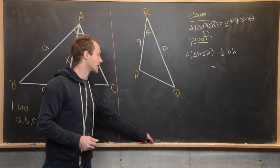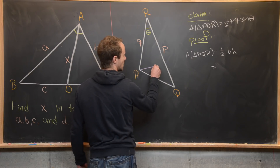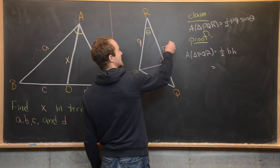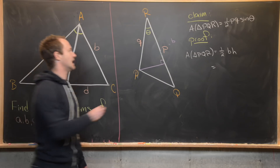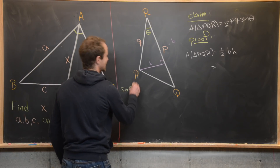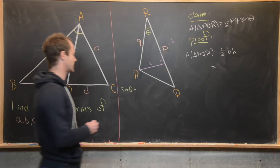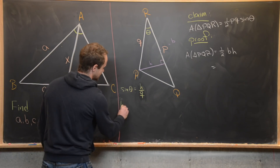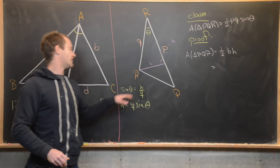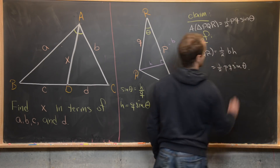We'll prove this using the fact that the area of a triangle is one half base times height, then calculating the height in terms of this angle. Drawing a perpendicular from P to RQ gives us a 90-degree angle, so P is the base and that perpendicular is the height. Since sine theta equals opposite over hypotenuse, we have sine theta equals H over Q, so the height is Q times sine theta. Putting both values in gives us one half PQ sine theta, as desired.